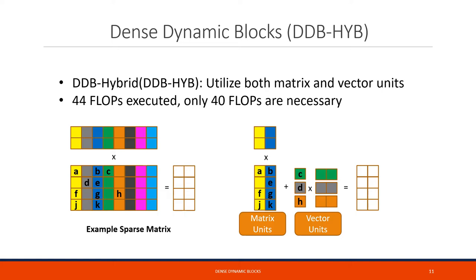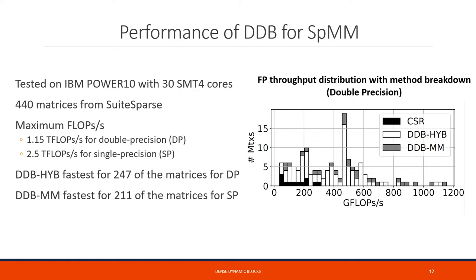In DDB hybrid mode, we separate the 4x1 blocks that would benefit from using MMA instructions from blocks with a single non-zero. The denser blocks are packed together to be executed on MMA units, while blocks with a single non-zero are stored in compressed format to be processed by vector units. In this hybrid mode, we only perform 44 floating point operations for the 40 needed, while also achieving high floating point throughput on IBM Power 10.